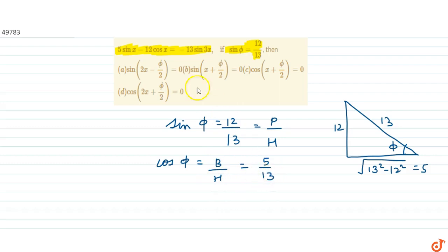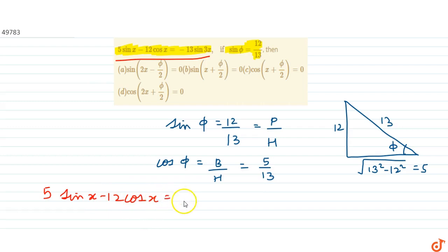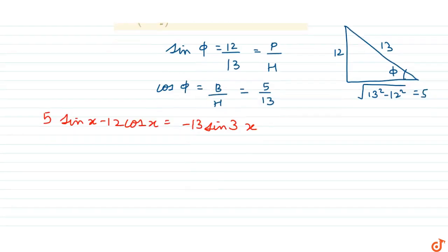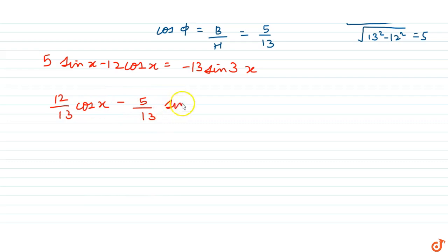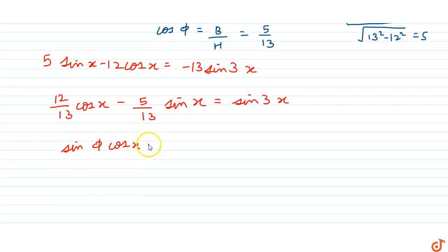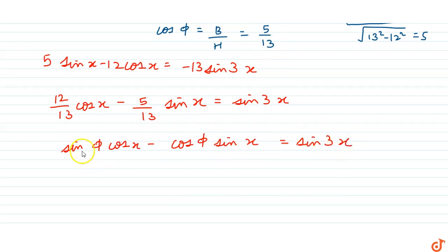From this, cosφ = base/hypotenuse = 5/13. Now consider the given equation: 5sinx - 12cosx = -13sin3x. Dividing by -13, we get (12/13)cosx - (5/13)sinx = sin3x. Substituting, sinφ·cosx - cosφ·sinx = sin3x.